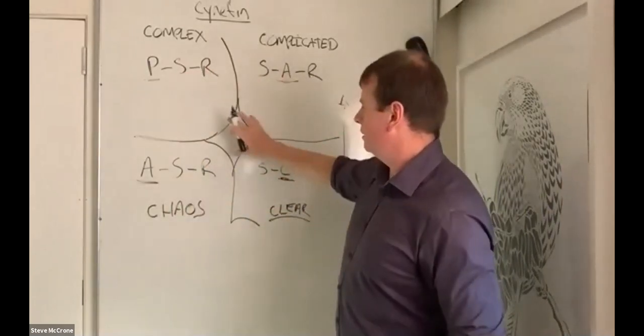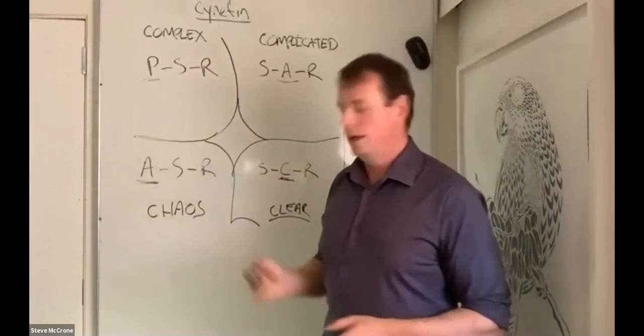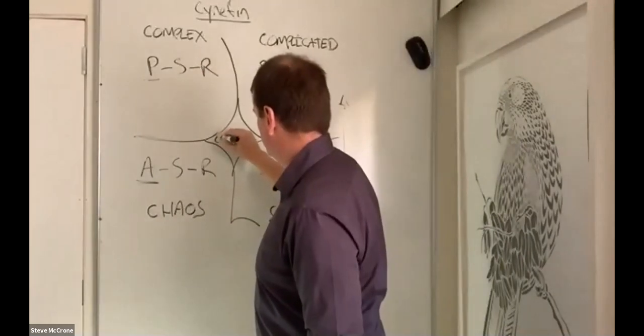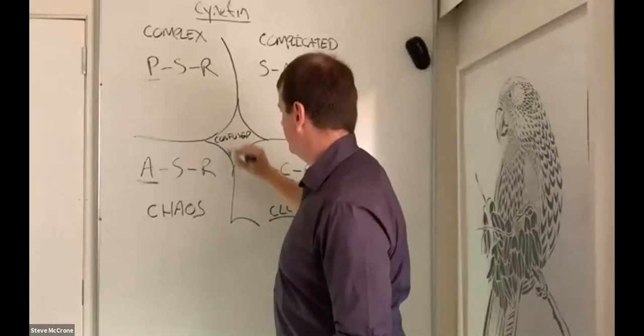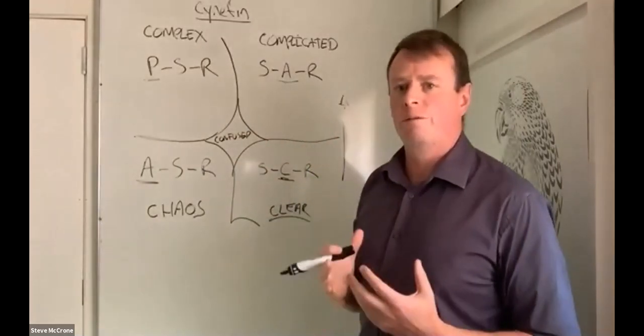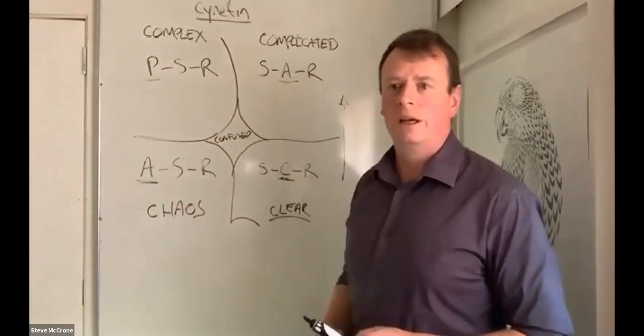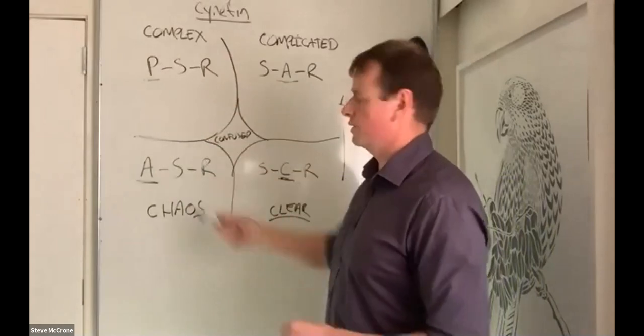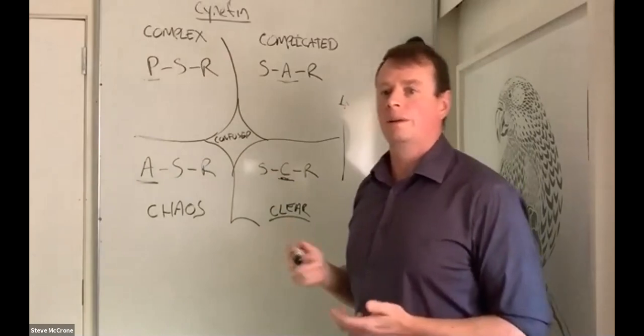This part in the middle is the fifth domain of Cynefin, we used to call it disorder, but now we can call it confused. When you're in a confused state, you don't have enough information to be able to contextualize your position in respect to the strategic environment. This framework gives us contextual understanding of a situation, but it also gives us guidance in how to act.